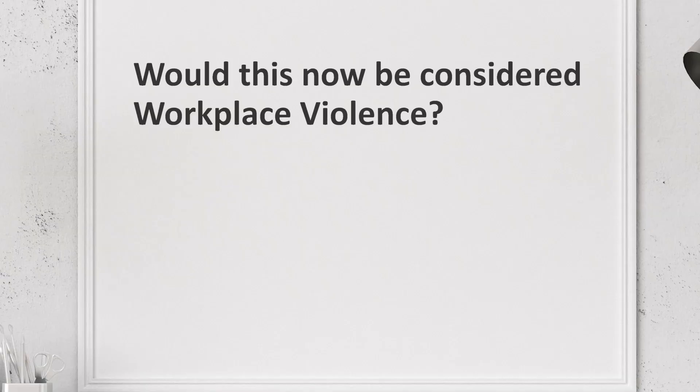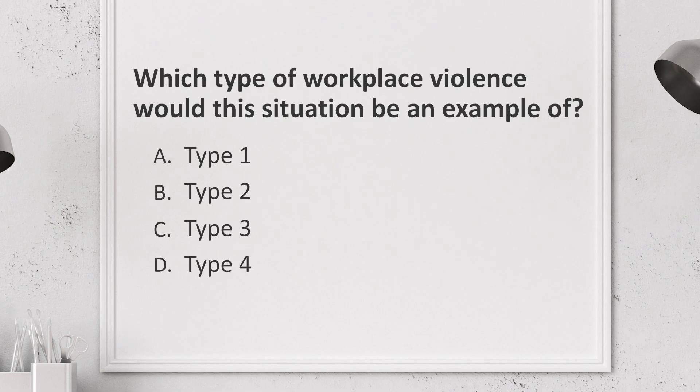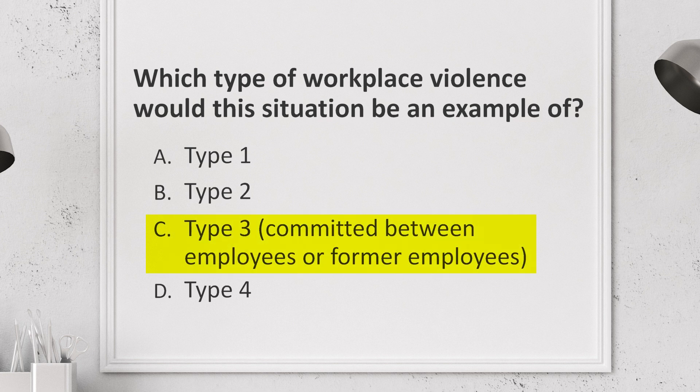Did your initial answer change after learning more about workplace violence? But what if the conversation escalates? Watch what happens next. Ian seems to have raised his voice and made a physical effort to crumple and throw a paper ball. He also made threats about taking matters into his own hands. Do you feel this has now become a behavioral concern? Yes. This would be considered workplace violence. Based on what you learned in this lesson, which type of workplace violence would this situation be an example of? The correct answer is Type 3. Type 3 is committed between employees or former employees.